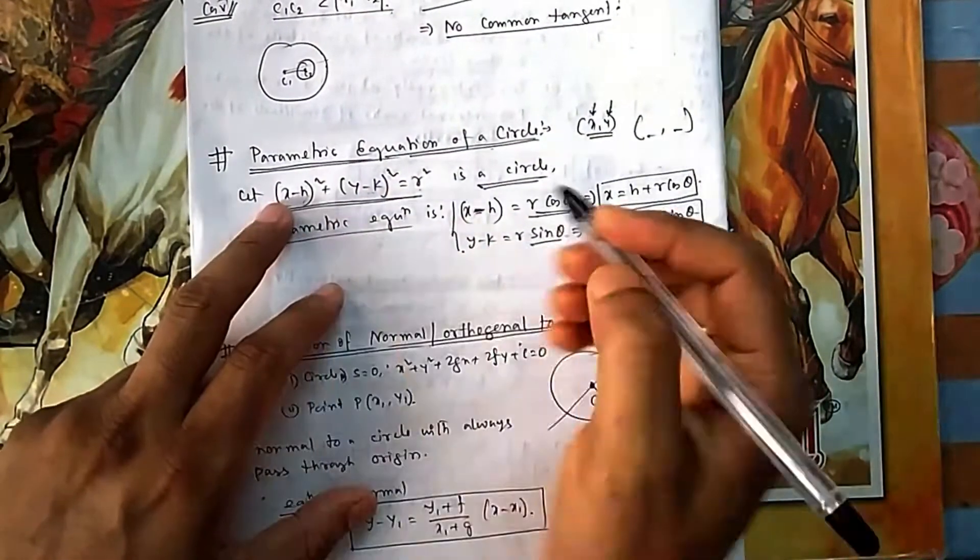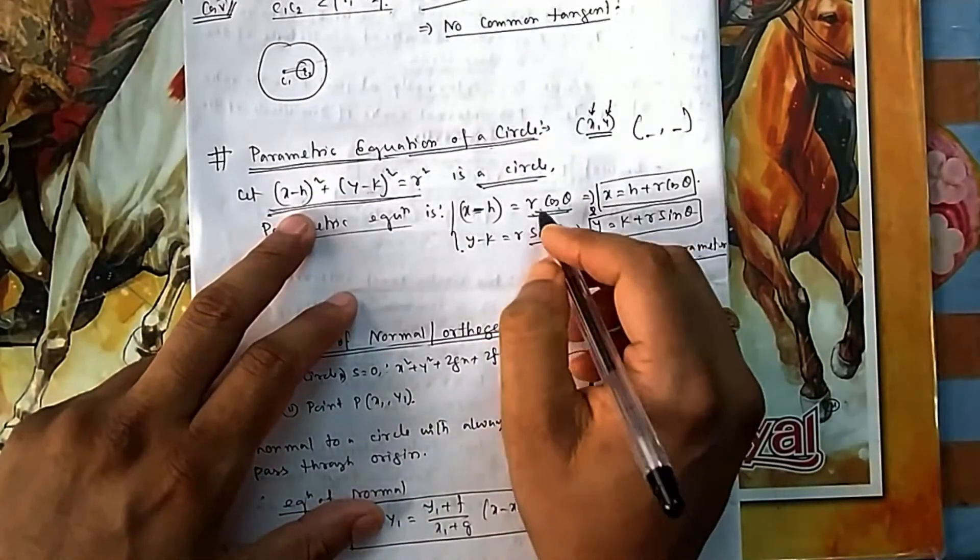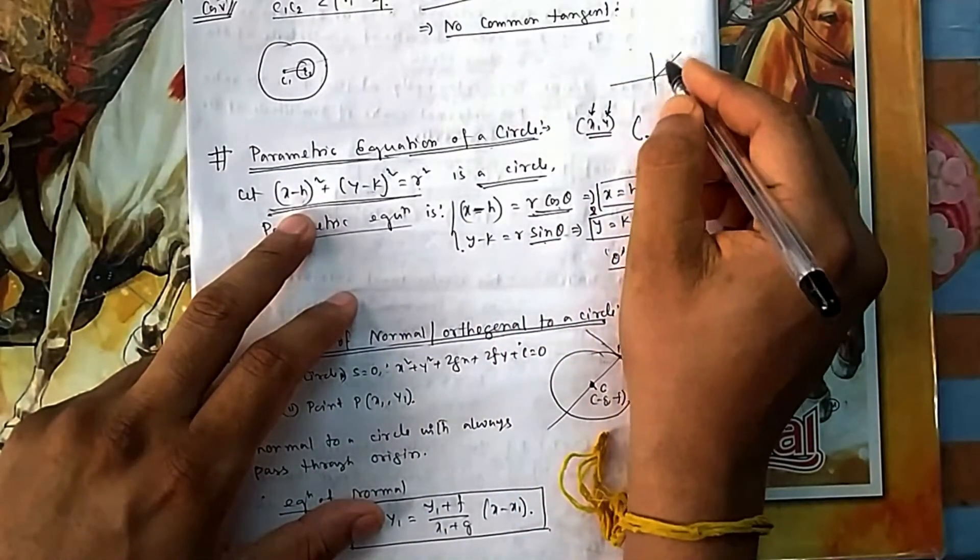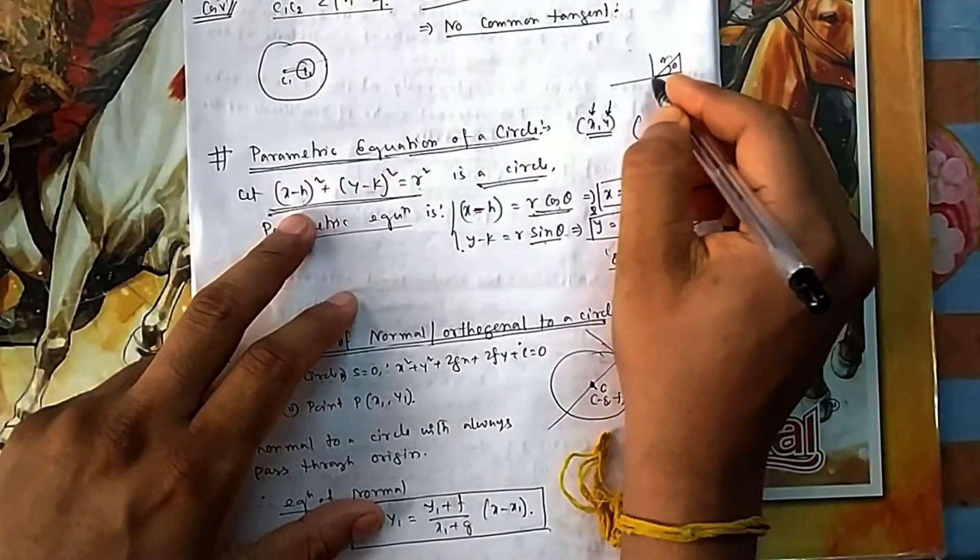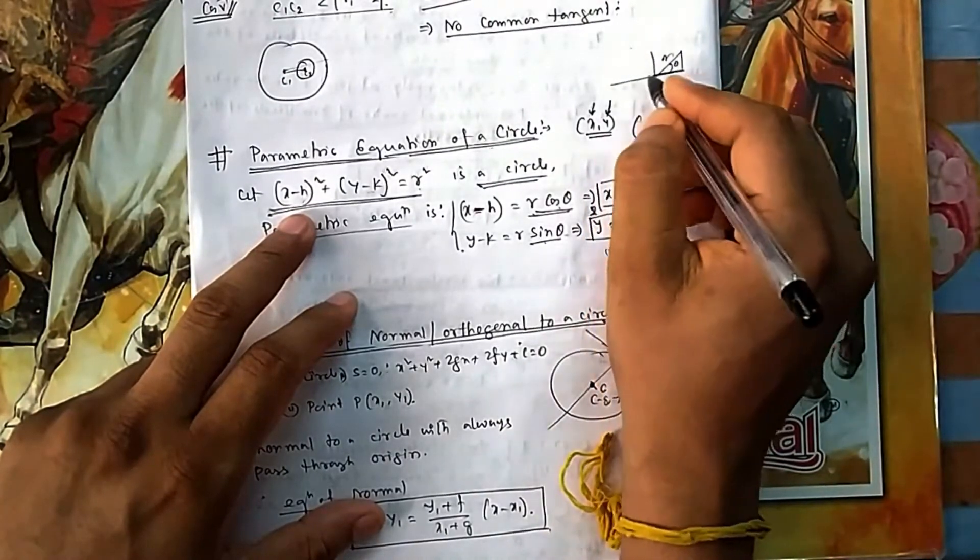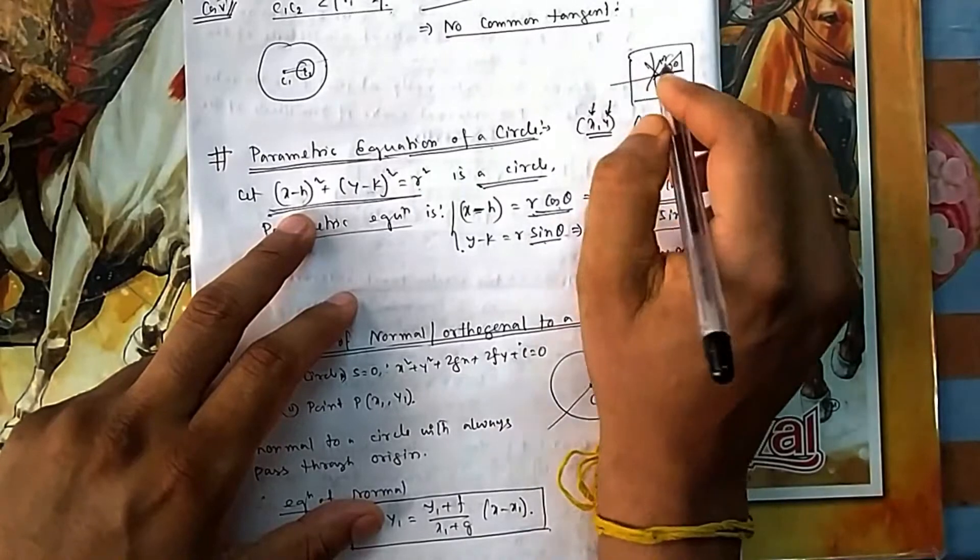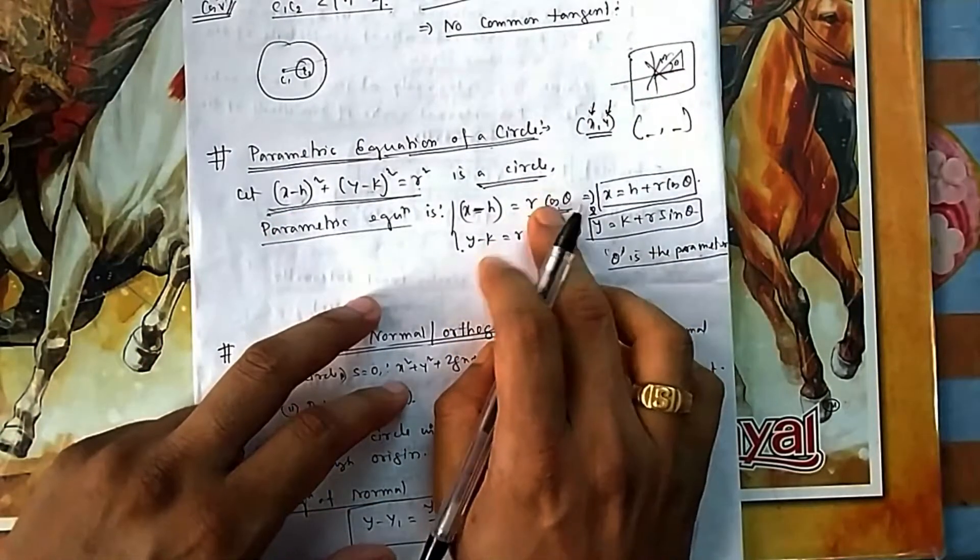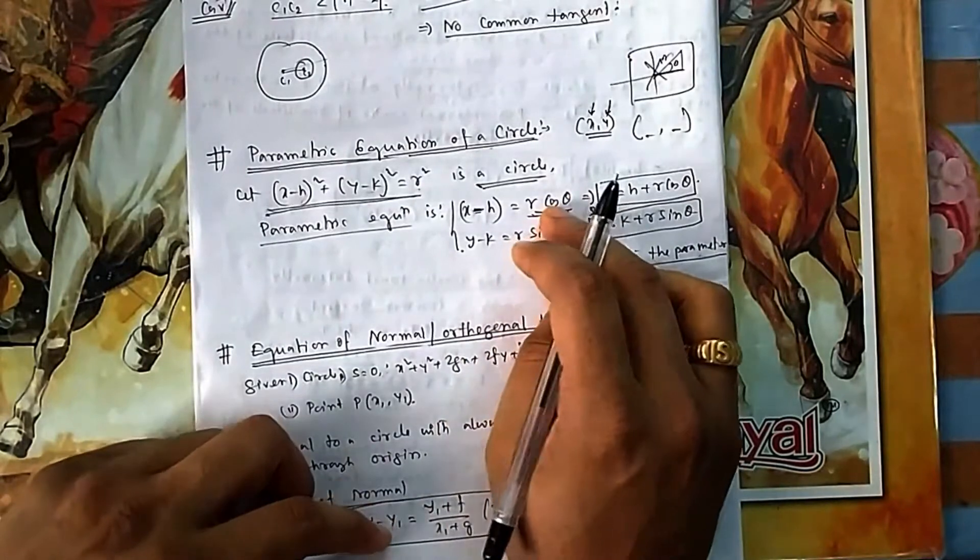If you see polar form also, this is r, then θ. We always treat x as r cos θ—not mandatory, but standard form. Otherwise it will make confusion: in some cases it is cos θ, in some cases it is sin θ.